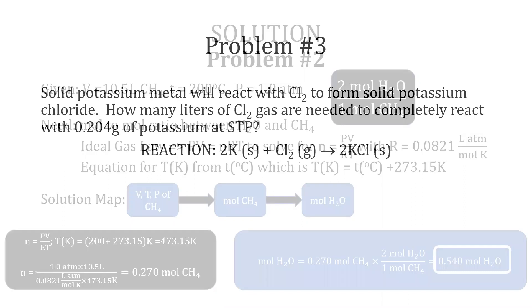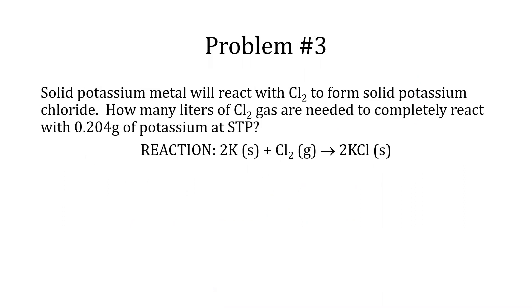Problem three is: solid potassium metal will react with Cl2 to form solid potassium chloride. How many liters of Cl2 gas are needed to completely react with 0.204 g of potassium at STP? The reaction is 2K plus Cl2 forms 2KCl.